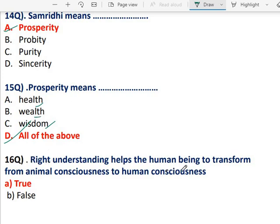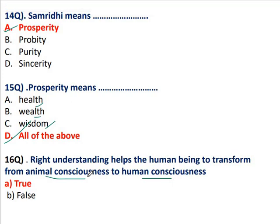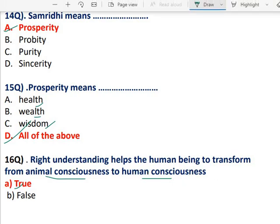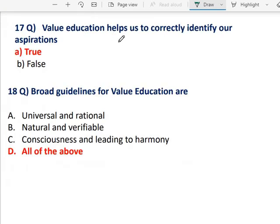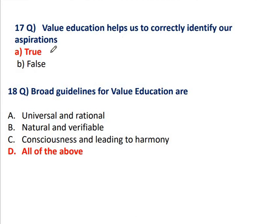The world needs to transform from an animal consciousness to a human consciousness. Animal consciousness is when physical facilities are considered fulfilling and complete. Question 17: The value education helps us to correctly identify our aspiration — that is also true.